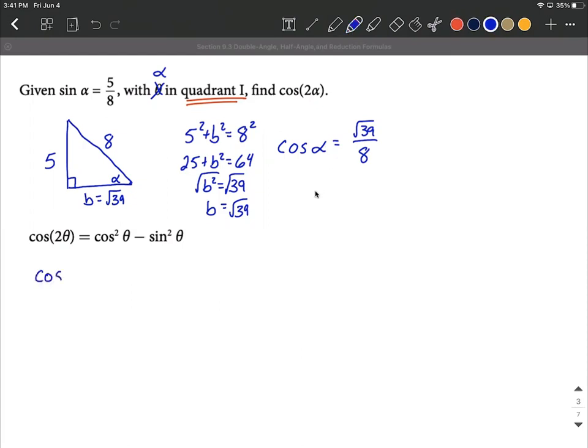to actually compute cosine of two alphas, where that comes from is it's going to be the cosine of alpha being squared minus the sine of alpha also being squared. So we can start replacing, and we can say cosine of alpha is going to be the square root of 39 over 8, but it gets squared, minus sine, which is 5 over 8, and it gets squared as well.